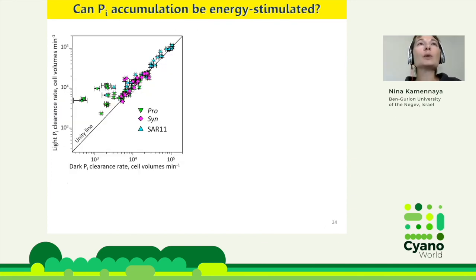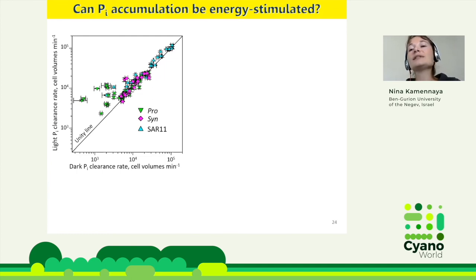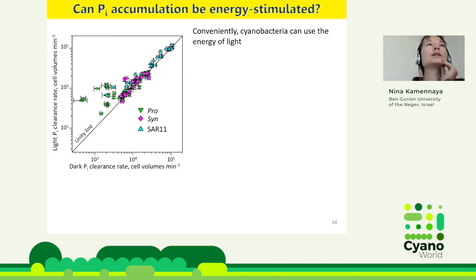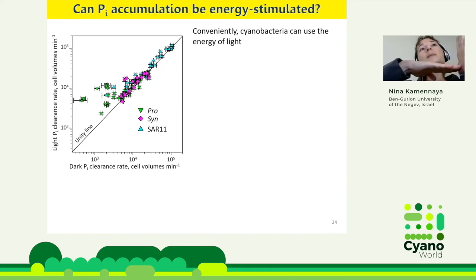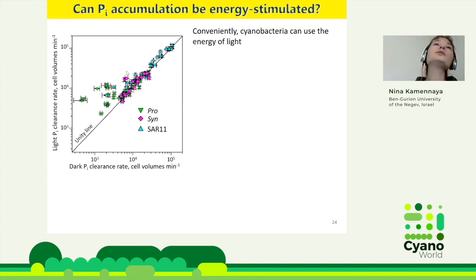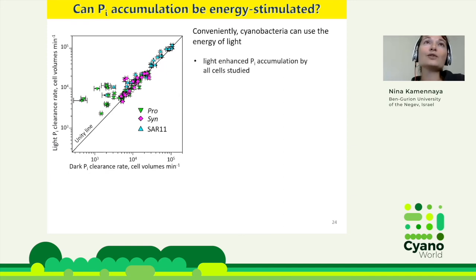To counter the criticism that inhibitors have side effects, we asked: can we stimulate the proton motive force and see higher phosphate accumulation? In cyanobacteria we can stimulate PMF by exposing cells to light. In the ocean, we compared phosphate uptake by Prochlorococcus, Synechococcus, and SAR-11 alpha proteobacteria — cells sorted one by one — in dark versus light. Most results fell to the right of the unity line toward the light axis, confirming that light stimulates phosphate uptake and that proton motive force plays a crucial role.